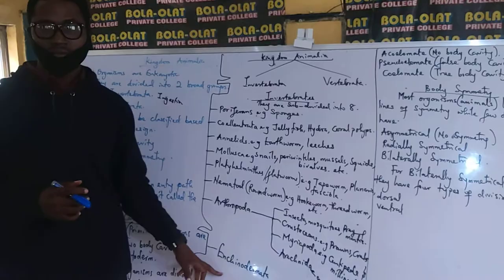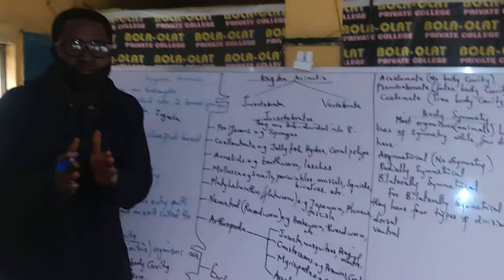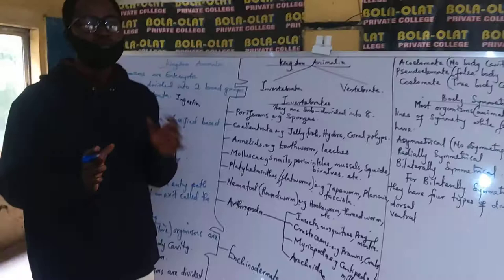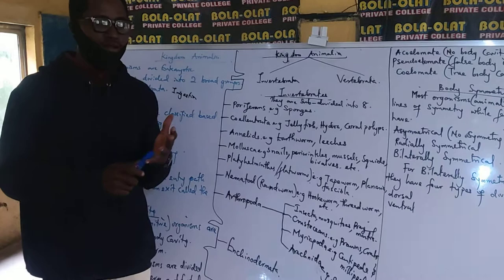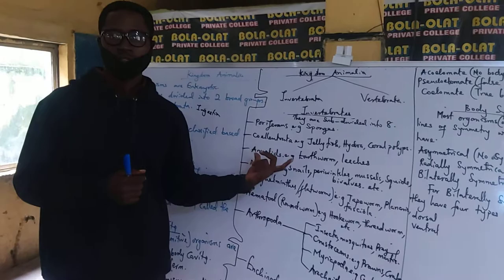Now let's start with the Porifera. The only example you need to know — once you see sponges, you know that is your answer. Which of these is a Coelentrata? Once you see hydra, coral polyps, or jellyfish — they are all coelenterates. If I say Annelida, examples are your earthworms and your leeches.